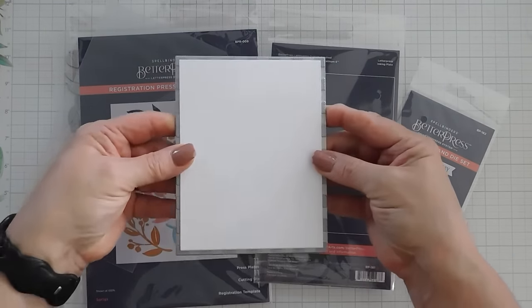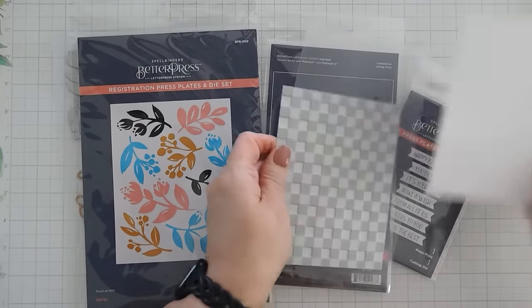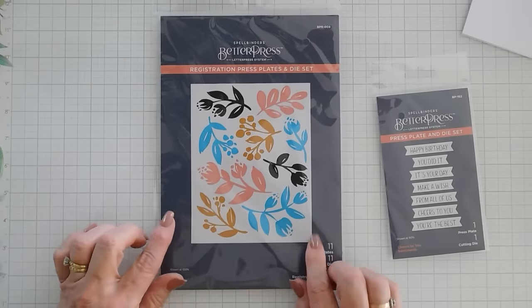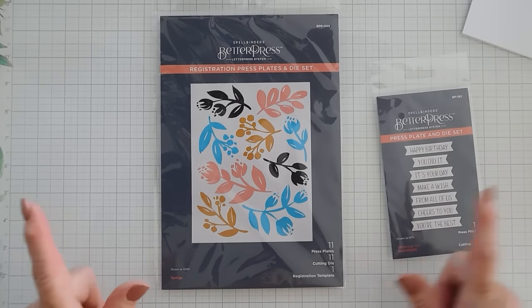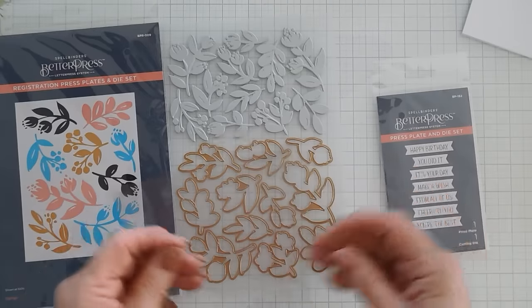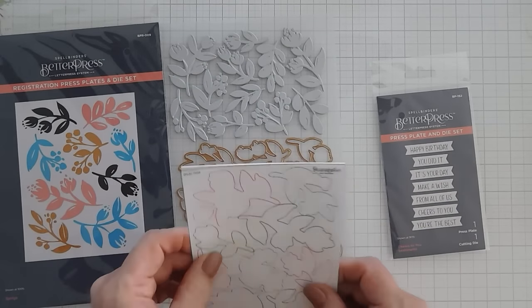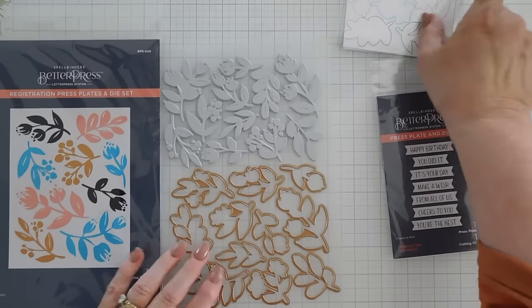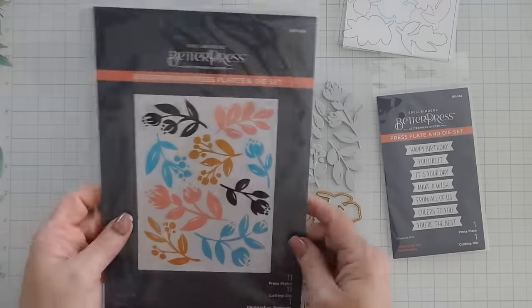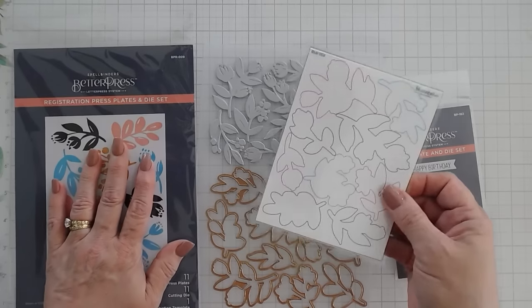We're going to be using this on our cards along with the registration press plate and die set. Love this. This is probably going to be one of my favorite sets because it's a registration, meaning you have the registration guide. It will show you how to put it on your A2 panel so it will fit perfectly, all of them, on your card. We're going to be using this for our card, but there's the die option that will cut them all out. How nice is that?